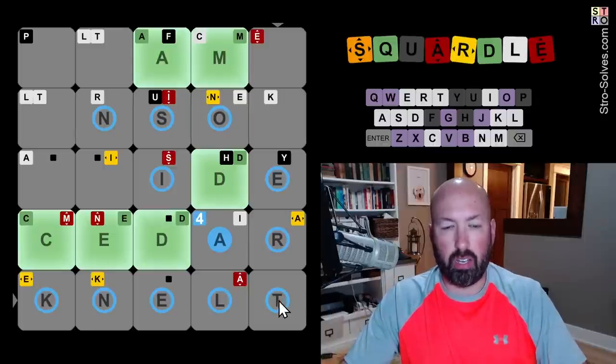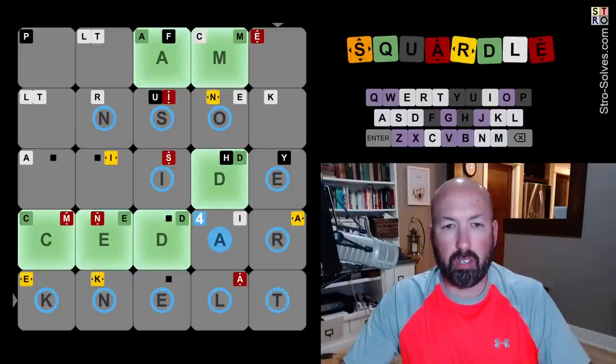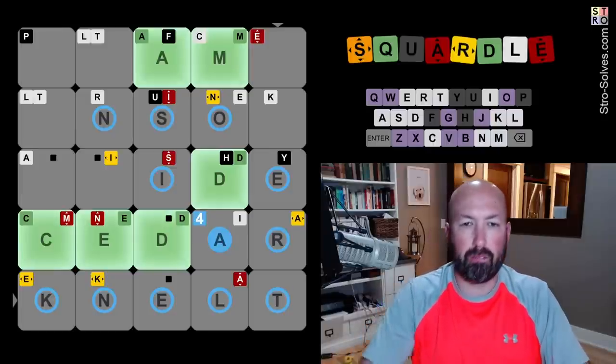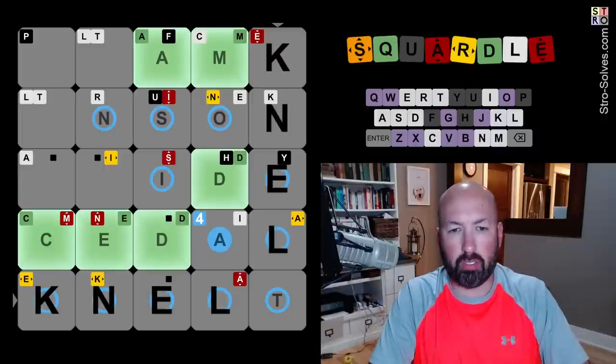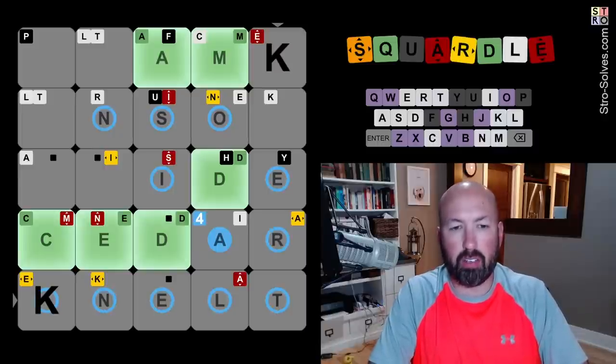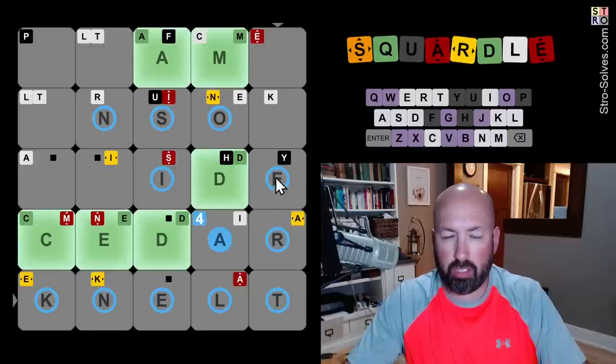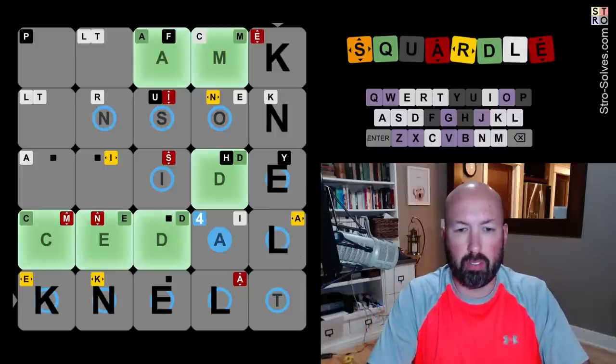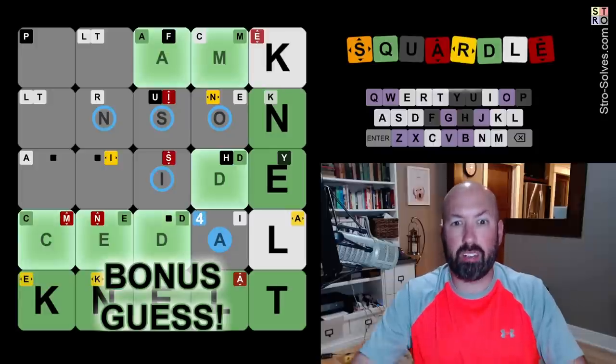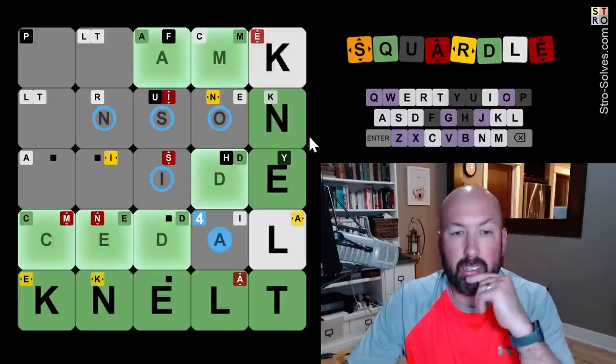So knelt, I think is pretty good. I think I'm just going to go for knelt. I like that because I think that's probably what the bottom word is. And I also think there's an E in the third position on this word. So let's go with that. Okay, it was knelt. Ooh, there's an N up there. Awesome.